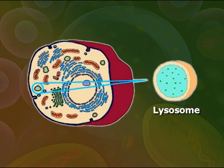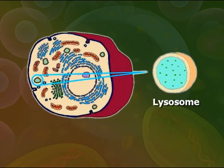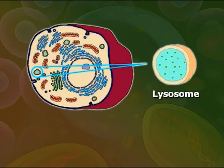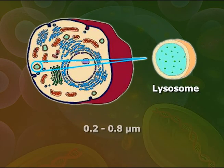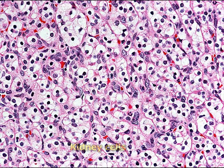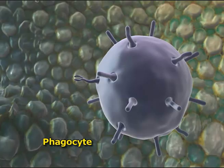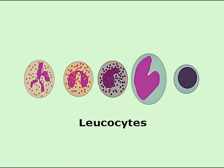The size of the lysosomes usually ranges from 0.2 to 0.8 micrometer, but may be exceptionally large in the cells of mammalian kidney — up to 5 micrometers — and even more in phagocytes and leukocytes.